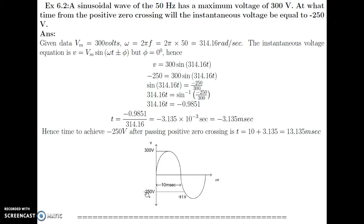The instantaneous voltage required is minus 250 Volts. So minus 250 equals 300 sin(314.16t), giving sin(314.16t) equals minus 250 by 300. For this type of problem, convert your calculator into radian mode because time T is required in seconds — we cannot take sin inverse in degrees. So 314.16t equals sin inverse of (minus 250/300), which gives minus 0.9851 radian.